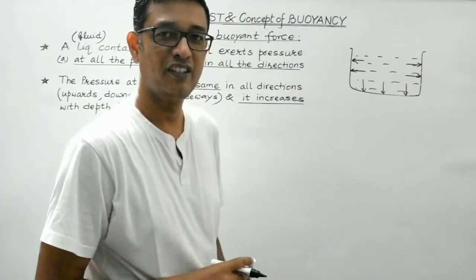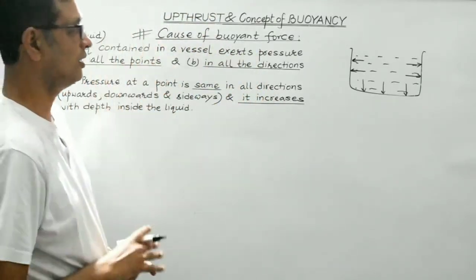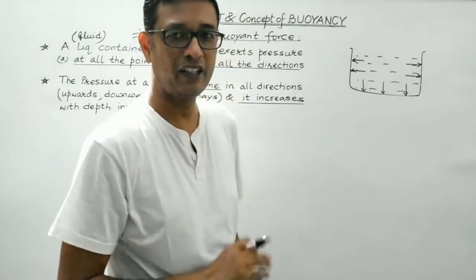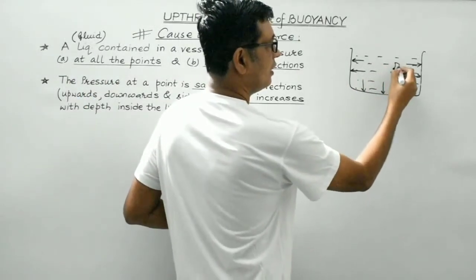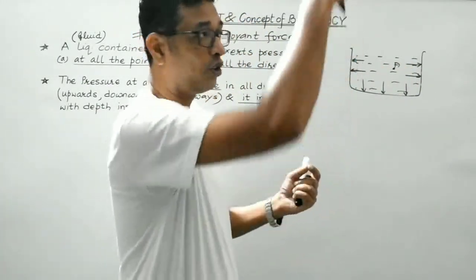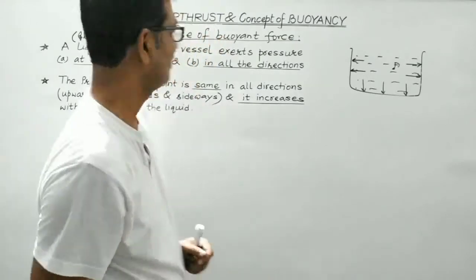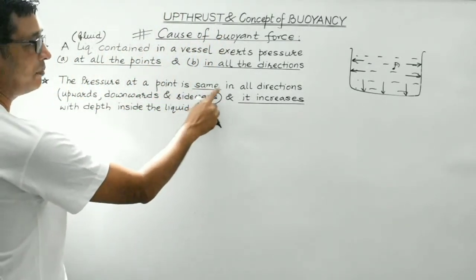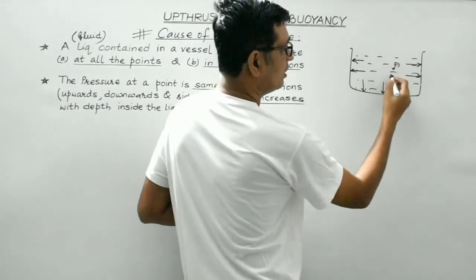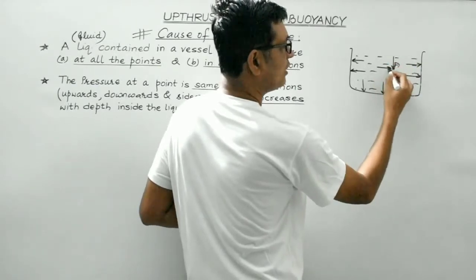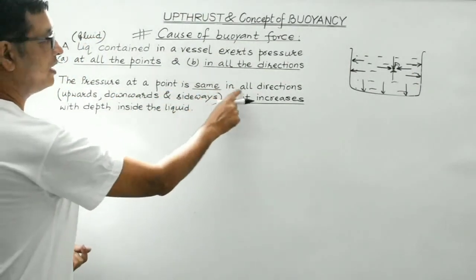Second point: the pressure at a point is the same in all directions. At a particular point, the pressure upward, downward, towards the right or towards the left is all the same at that point. So the pressure at a point is constant in all directions. And most importantly, pressure increases with the depth inside the liquid or fluid.